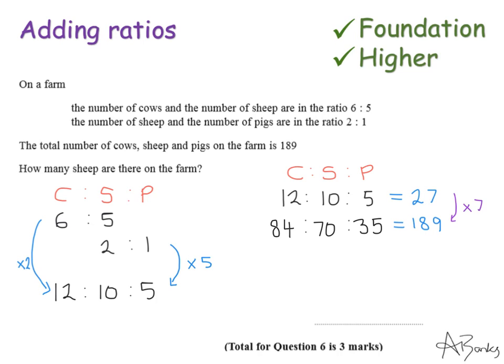This tells me the number of cows, the number of sheep and the number of pigs on the farm. I can check I've done this right by just adding these three numbers together and checking I do get 189, which I do. So the question was, how many sheep are there on the farm? So there is 70 sheep.